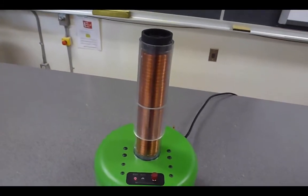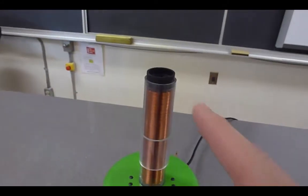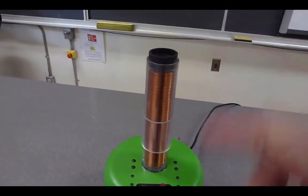Which essentially means the ring will make a current and a magnetic field that wants to get away from this coil. So it should be launched straight up towards the ceiling.